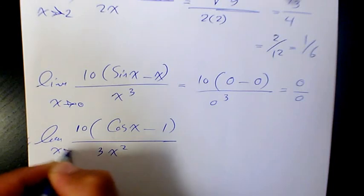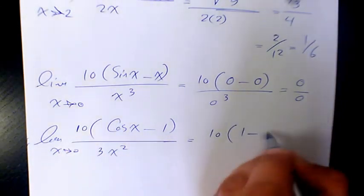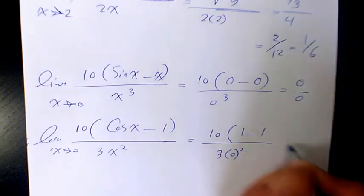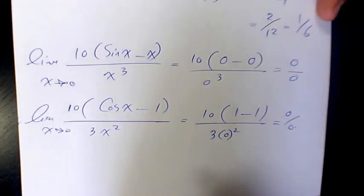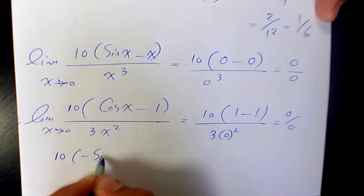Limit when x approaches zero, that's going to be 10 times one minus one over three zero squared. That's going to be zero over zero, so we need to do L'Hôpital's rule one more time. 10 times negative sine x over six.